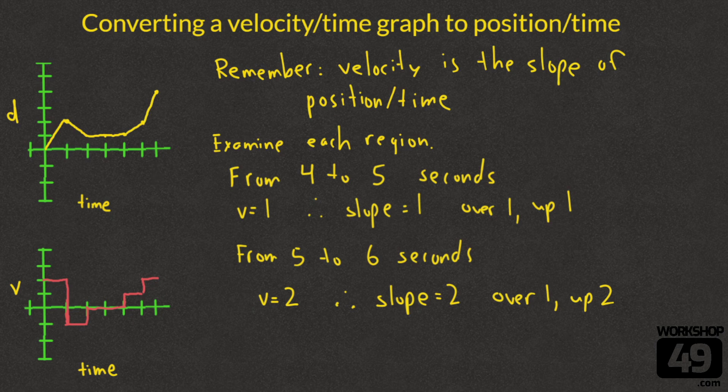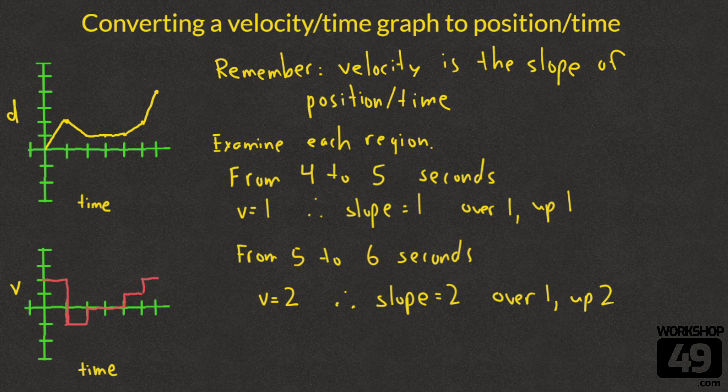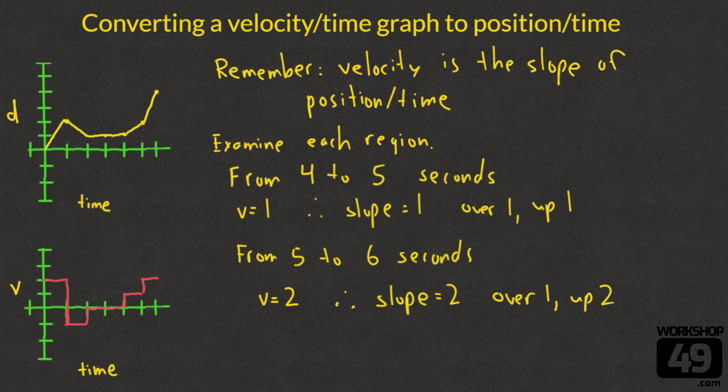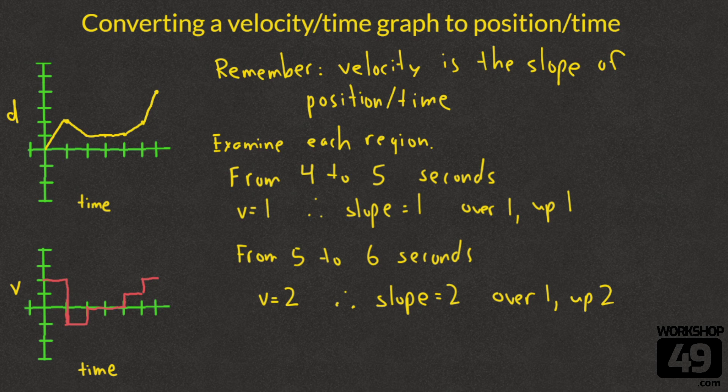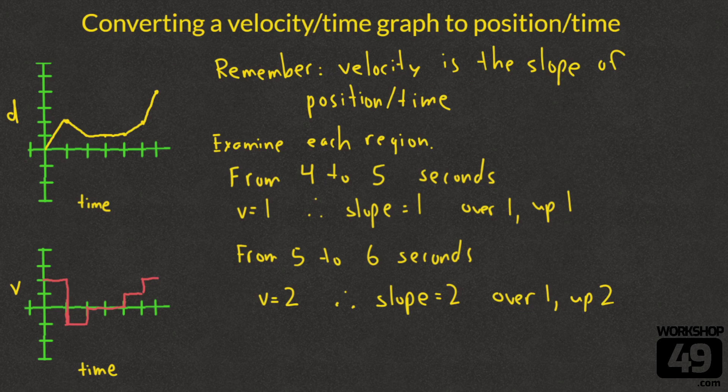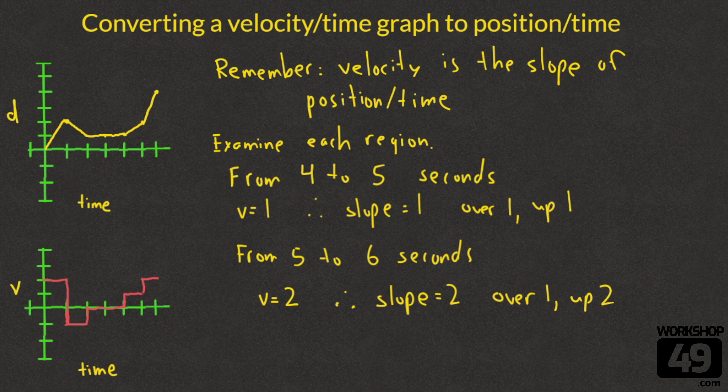And just like that, we have an absolutely fabulous position time graph. The trick to doing this was to look at each interval of the velocity time graph, recognize that in each 1 second interval it was telling you the slope of that region, and then graphing a small fragment of your position time graph with a slope that was the same as the velocity. As long as you keep doing it as little tiny increments, you should be able to get a position time graph no problem at all. If you have any questions, please leave them down in the comments below. Thank you very much, and I'll be looking forward to seeing you next time.